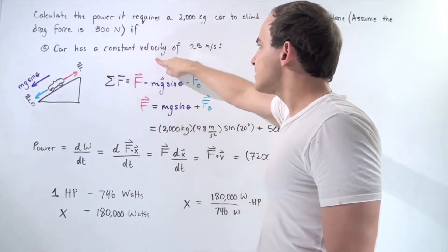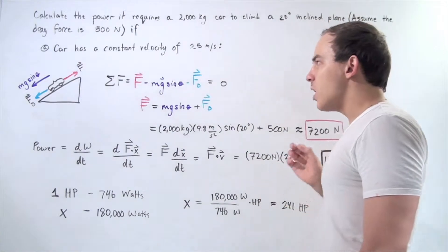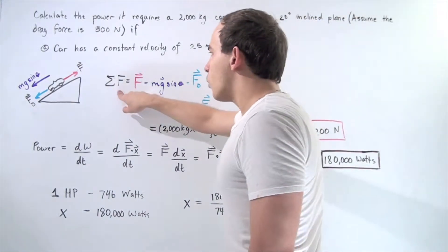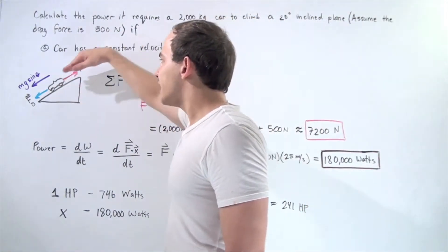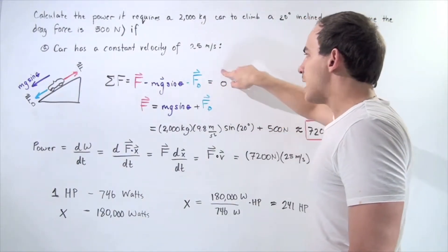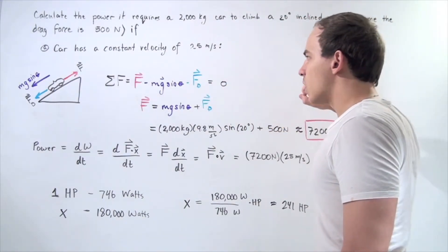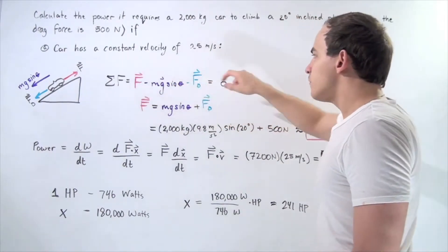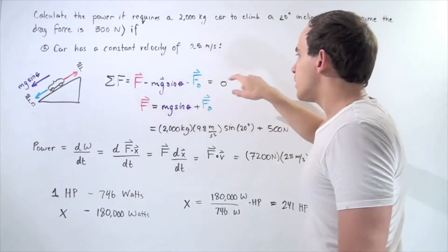Because we have constant velocity, according to the second law of motion, the sum of all the forces acting on the car along the inclined plane is equal to zero. This is equal to m times a and a is zero. If we sum up all the forces, we get the following result.